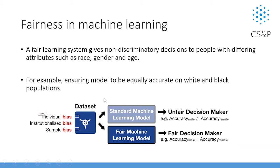For example, we have to ensure a model is equally accurate on white and black populations. Here I use a figure to show the example. If we have a dataset with a standard machine learning model versus a fair machine learning model, and the dataset includes bias — individual bias, institutional bias, or all kinds of biases — the standard machine learning model has a very high probability of giving an unfair decision. With a fair machine learning model, we hope the model gives fair decisions where male and female have the same accuracy.